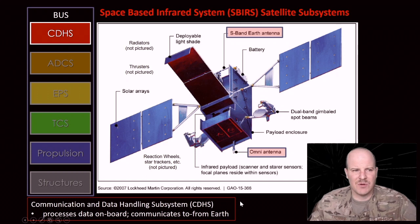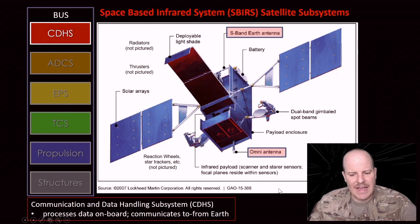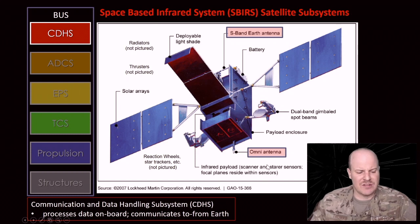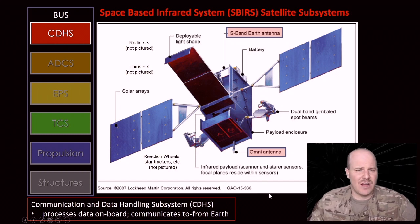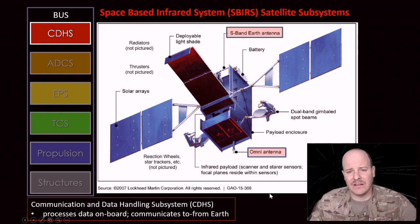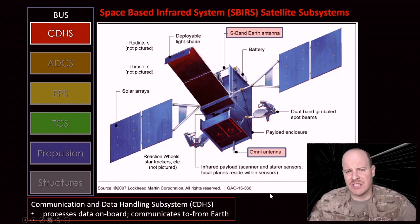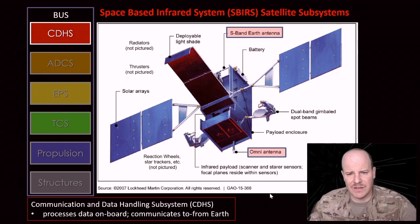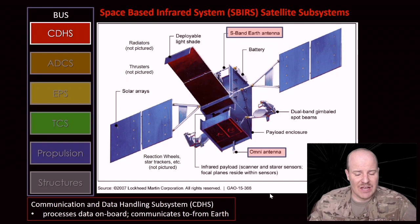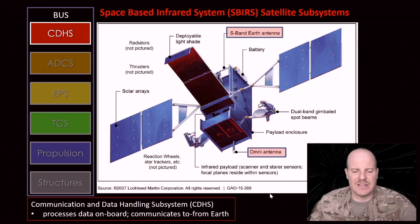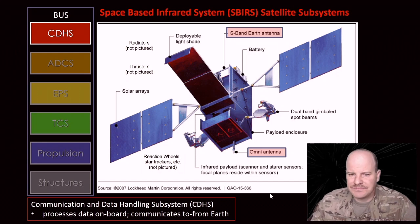What is SBIRS's COM system? It's got a couple of antennas pointed down towards the surface of the earth. Notably, it's not just communications — it's data handling as well. There are images generated from the camera and from the sensors, and it's actually processing that data as well. That's a part of the CDHS subsystem.